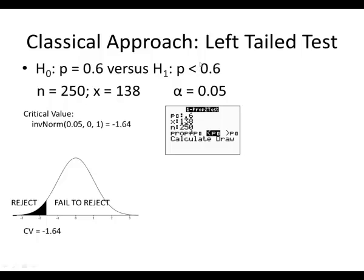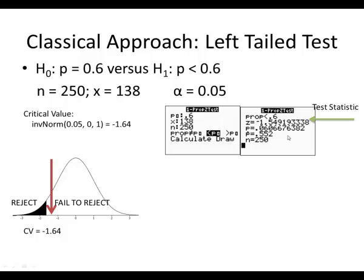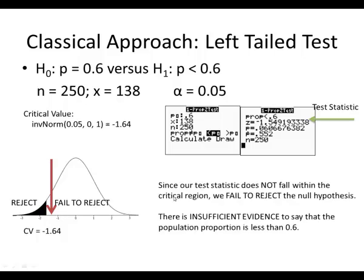We have a left-tailed test because our alternative hypothesis is less than 0.6. Once we calculate, our test statistic z is equal to negative 1.549. If we place that on the number line, it comes before negative 1.64, so that is in our fail-to-reject region. That test statistic, negative 1.54, is greater than our critical value. The critical value at negative 1.64 is smaller than our test statistic at negative 1.5. So since our test statistic does not fall within the critical region, we fail to reject the null hypothesis.